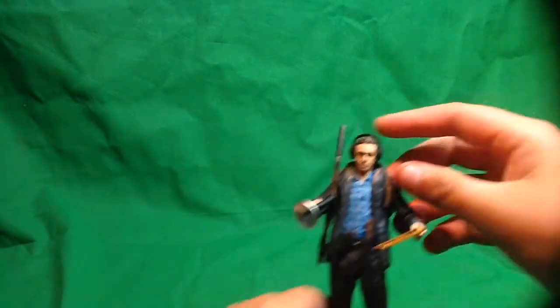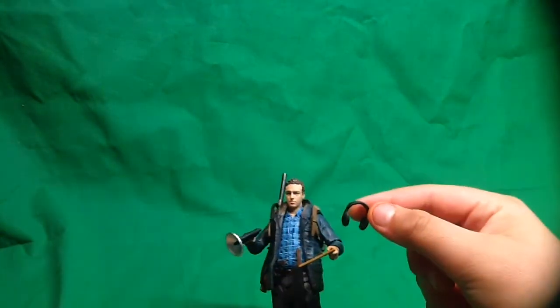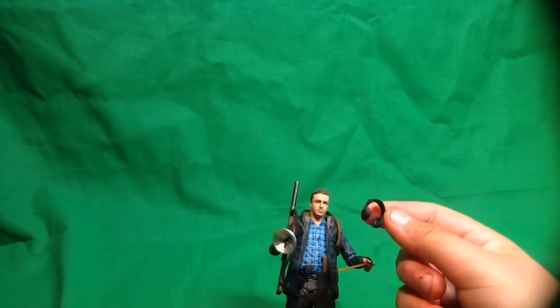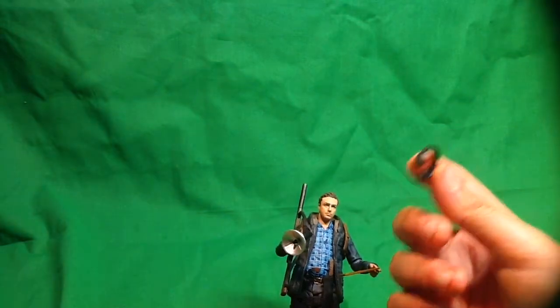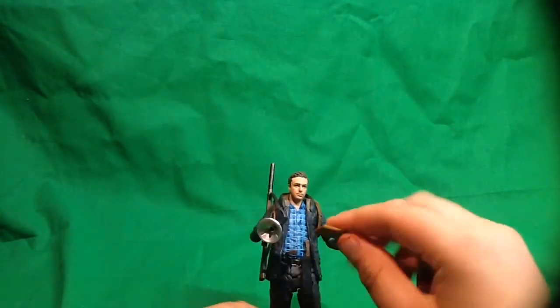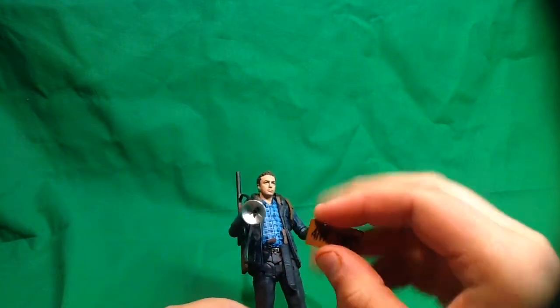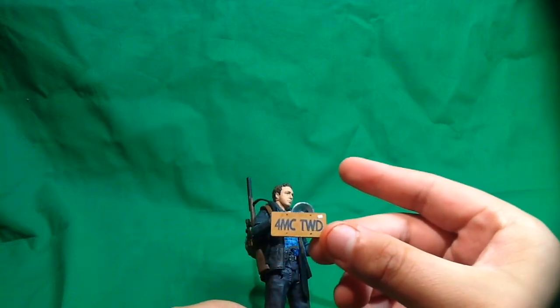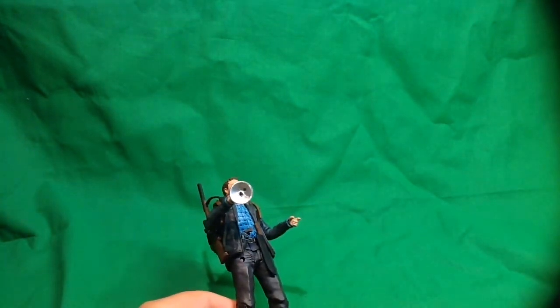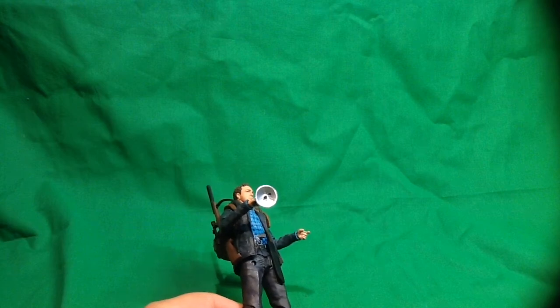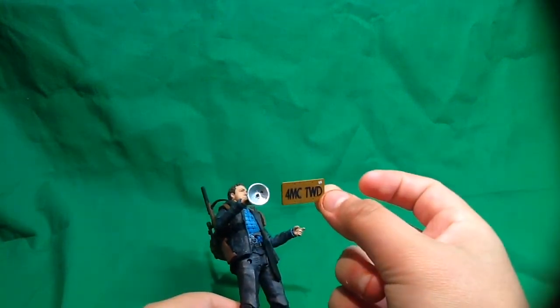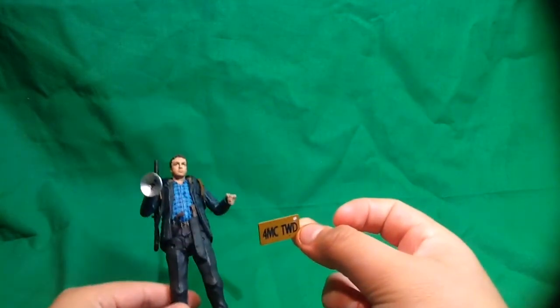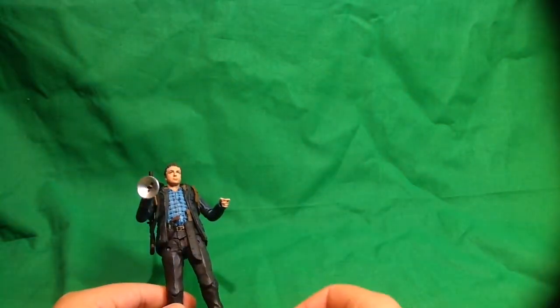Now, taking a look at the accessories, he does come with headphones, which fit on really nicely. I believe this is the first time we've seen any accessory like this, a headphone that can go onto the figures. It also comes with a license plate that reads 4MCTWD, which basically stands for AMC's The Walking Dead. Which is a really nice addition that they added.